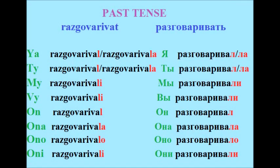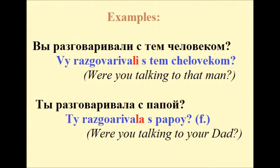Past tense of разговаривать: Я разговаривал / я разговаривала, ты разговаривал / ты разговаривала, мы разговаривали, вы разговаривали, он разговаривал, она разговаривала, оно разговаривало, они разговаривали. Examples: Вы разговаривали с тем человеком? — Were you talking with that person? Ты разговаривала с папой? — Were you talking with dad?